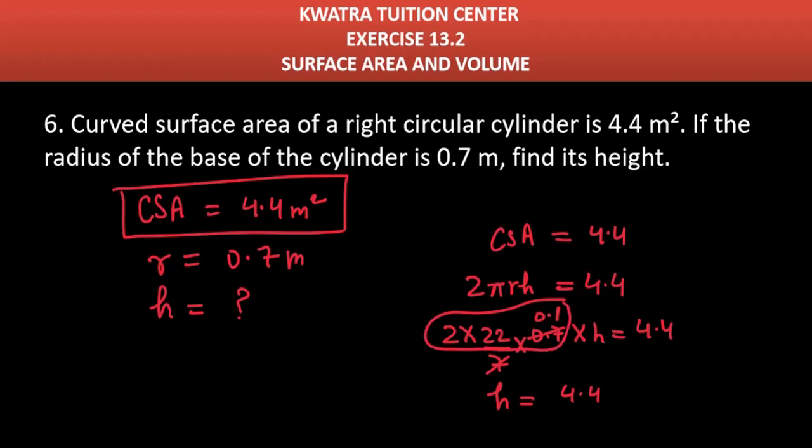2 into 22 is 44, 44 into 0.1 will give you 4.4 again. So divide it. What will you have? 1 for you, 1 meter.